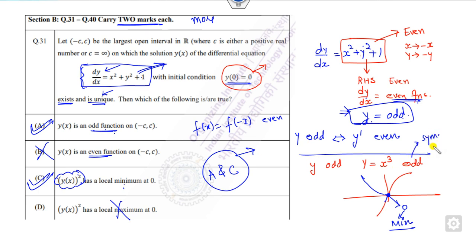If it is odd, then it is symmetric about the origin. So if you take the square, this part will be upside. This part will always be the minimum. A and C are the correct options.